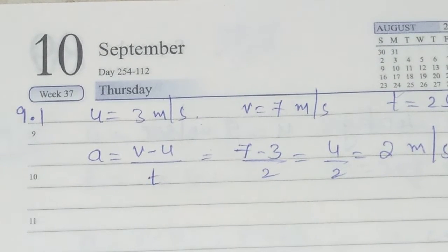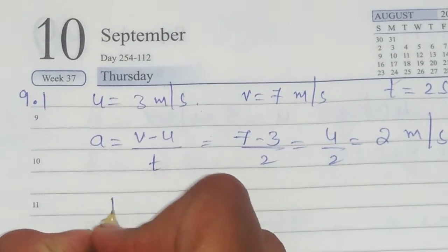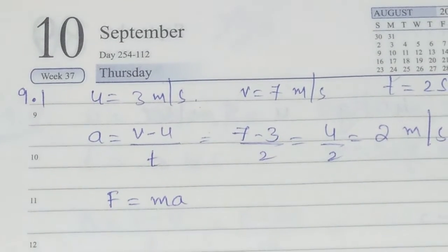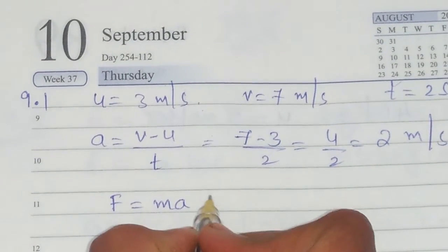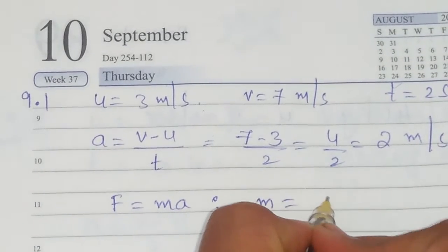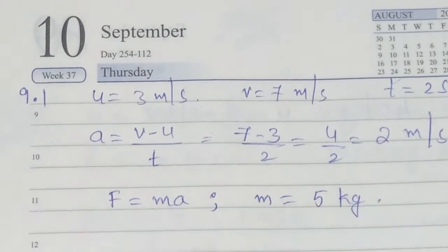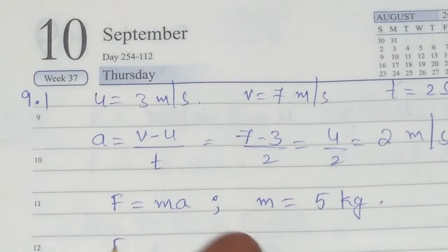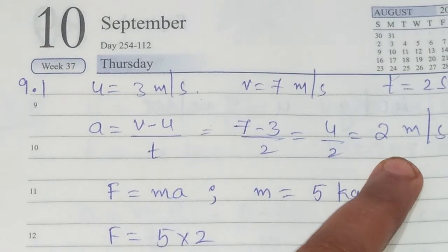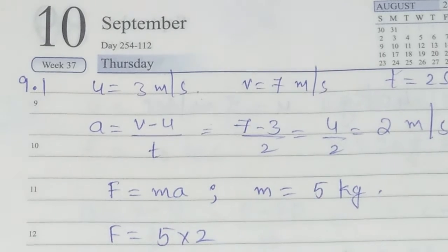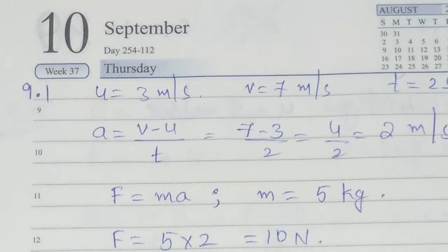Then we have to find out the magnitude of the applied force. What we have to do is write the formula F is equal to Ma, which we derived already from our second law of motion. In the question, M value is given as 5 kilograms. So force is equal to 5 into 2, because mass is already given and acceleration we found is 2 meters per second square. So 5 into 2 gives us 10 newtons. This is the magnitude of the applied force.